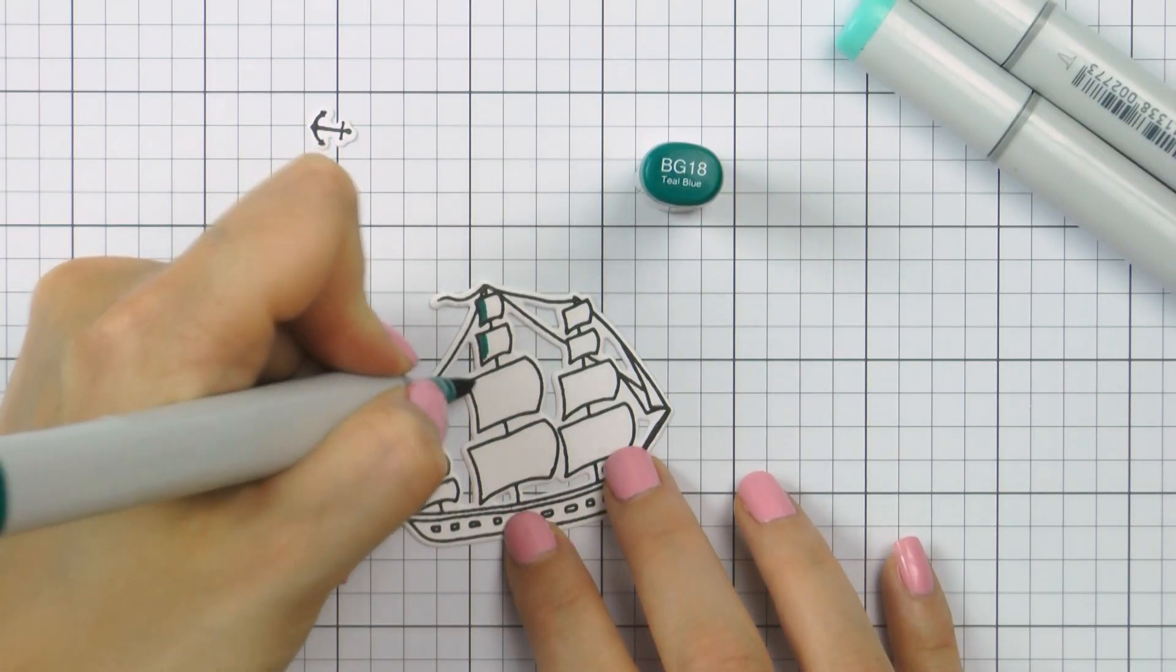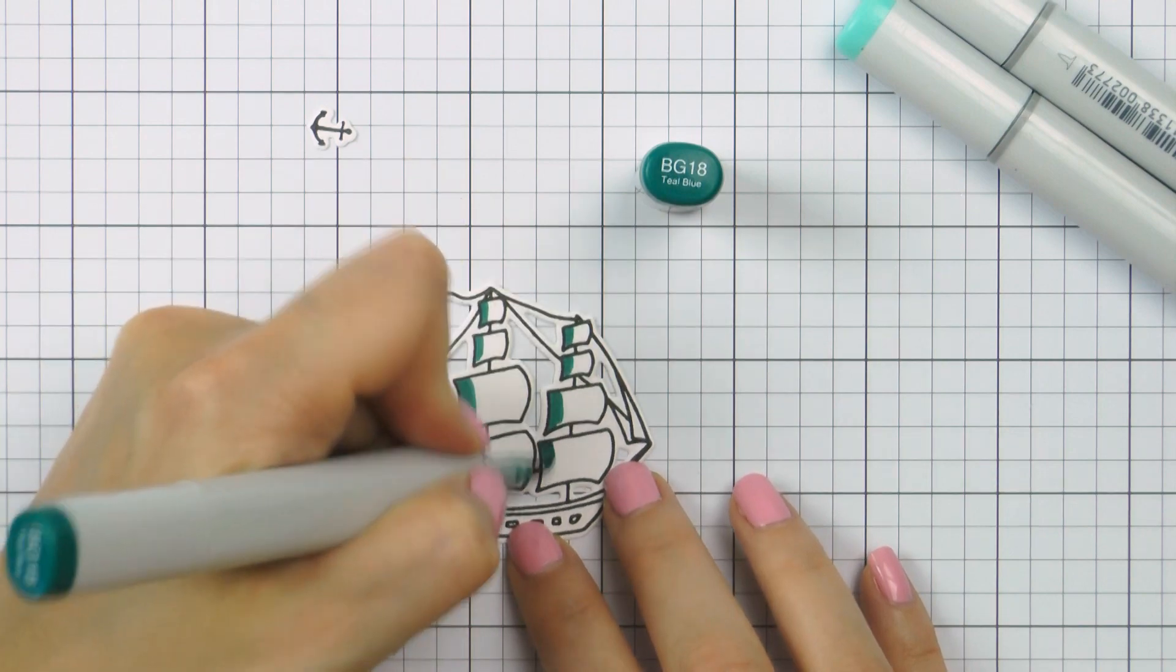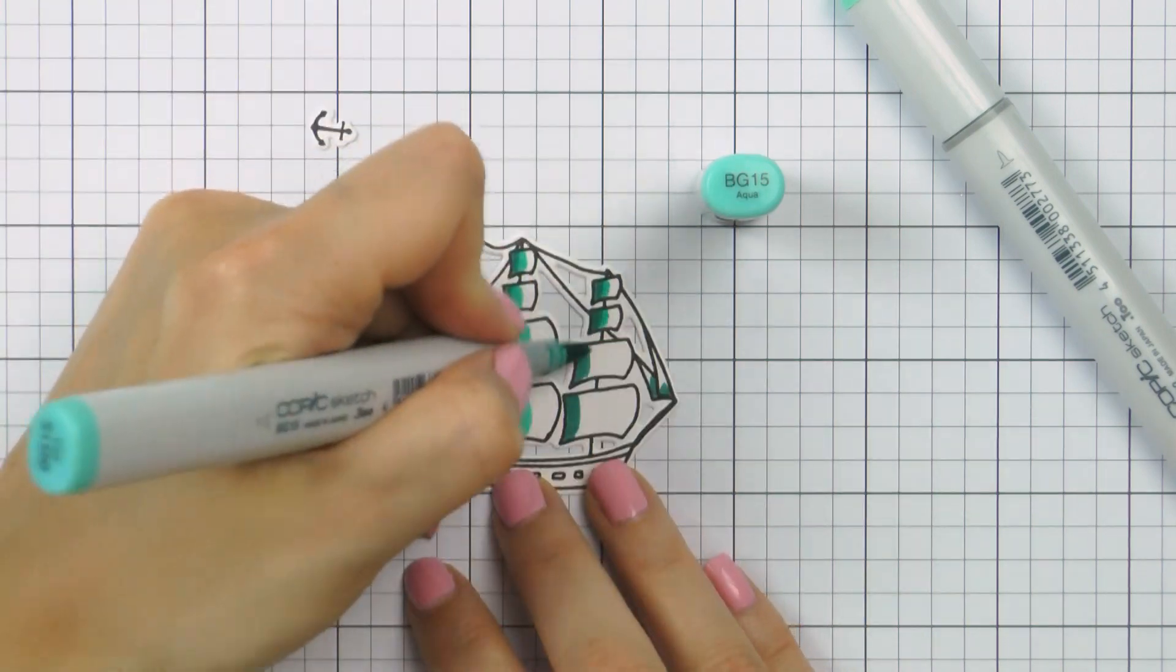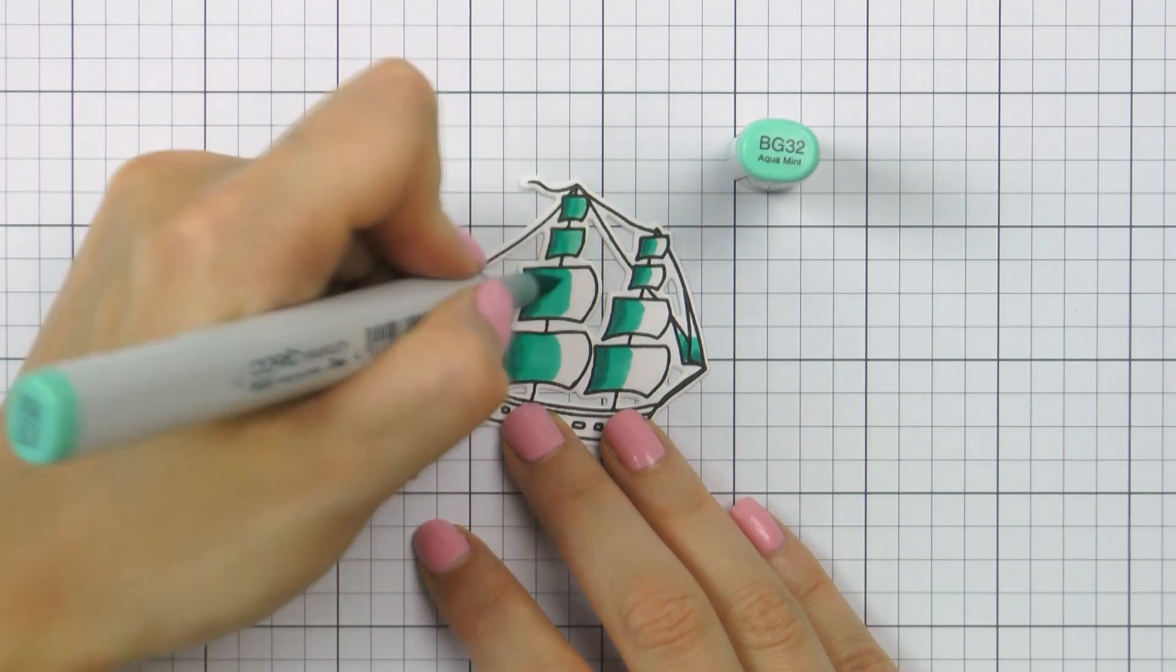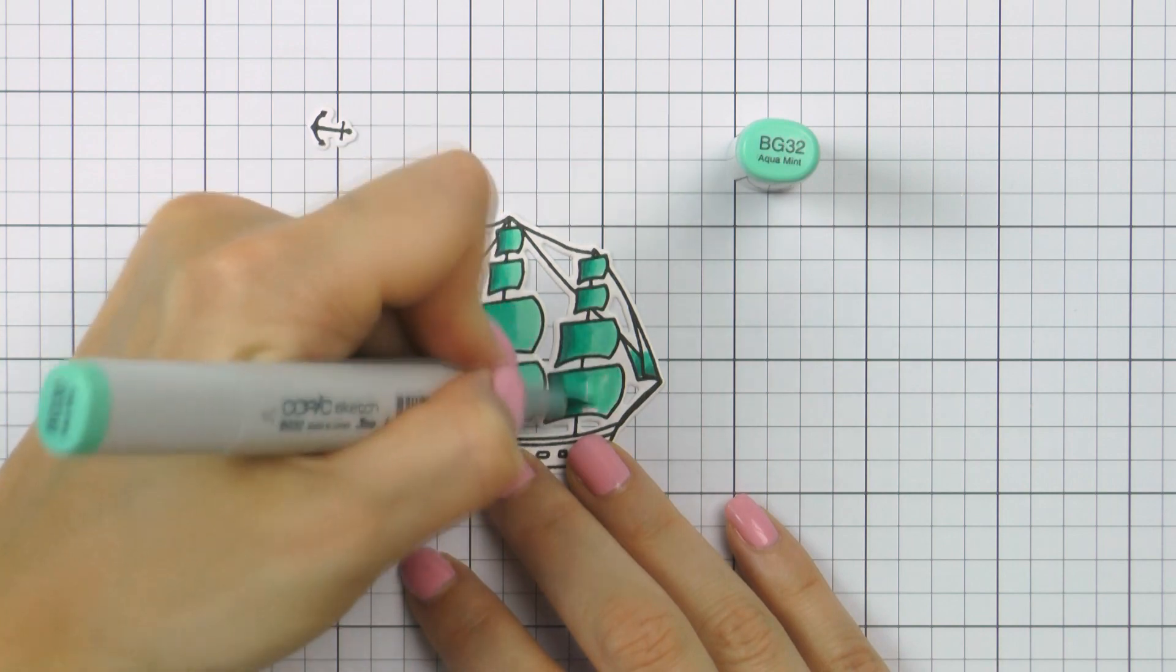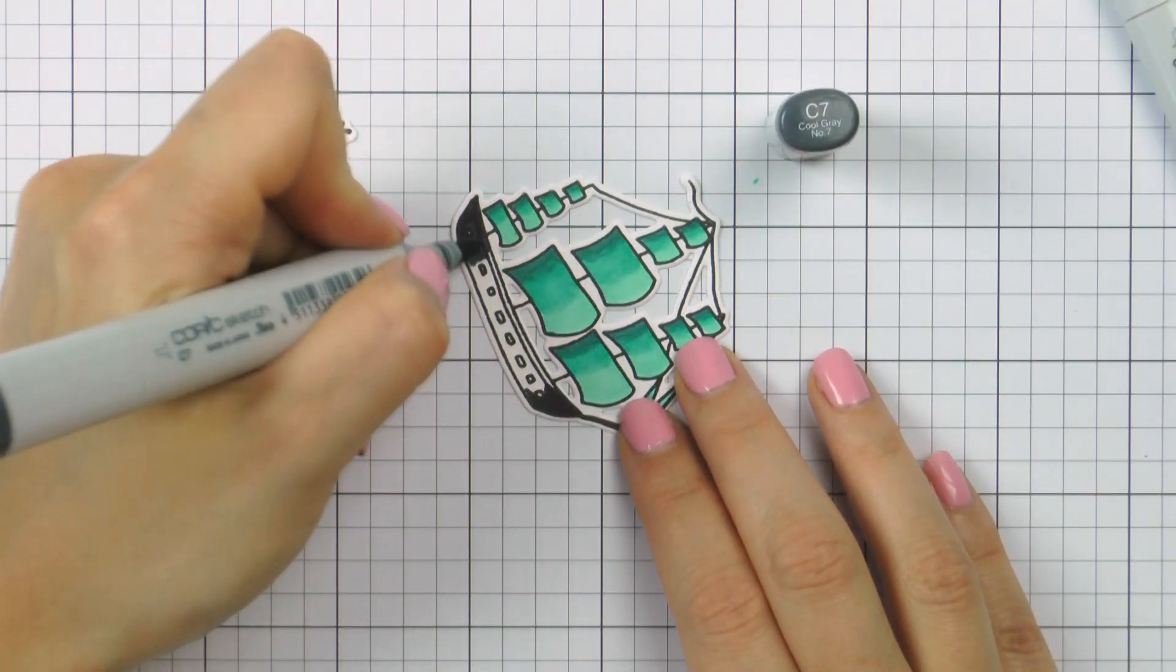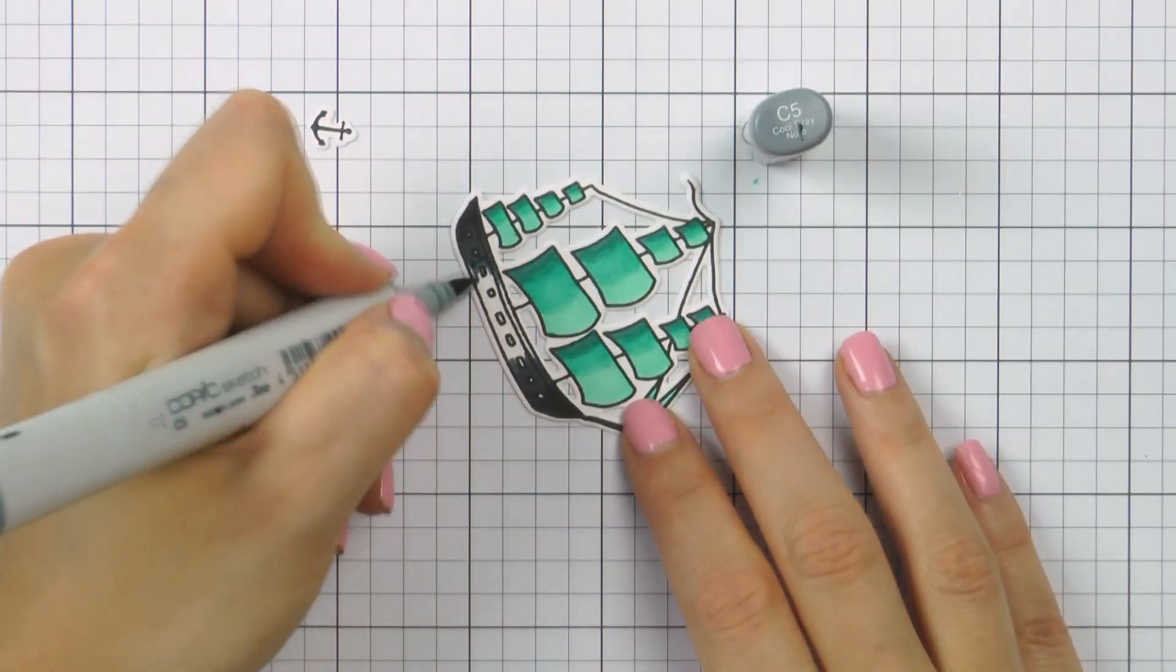To complete my third card, I colored my die-cut ship using Copic markers. The colors I picked were dictated by the colors I used for my background stamping. I wanted my ship to match in color as much as possible. I used BG18, BG15 and BG32 markers to color the sails. For the hull of the ship I picked cool grays. You'd expect it to be brown since the hull of that kind of ship would be made out of wood, but I didn't want to introduce additional color to these monochromatic cards so I went with gray instead and I think that turned out rather nice.